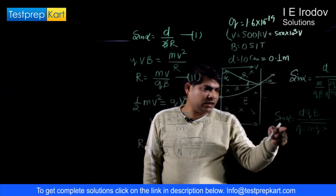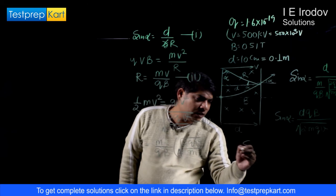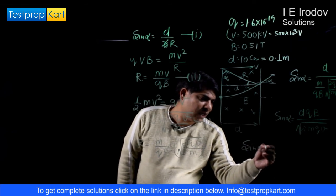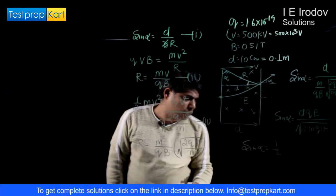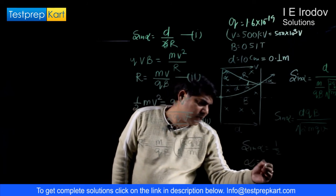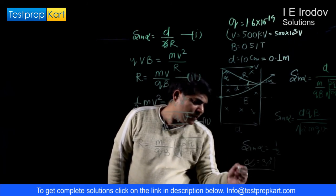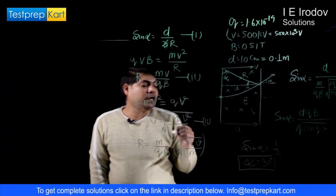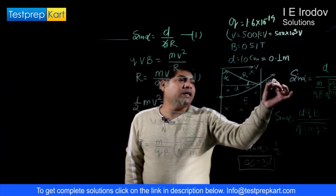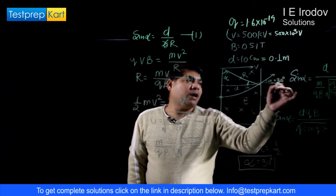Now we will substitute in this equation and solve. Then we will get sin alpha equals 1 by 2, and from here we will get alpha equals 30 degrees. This means this proton will deviate by 30 degrees from its original path.